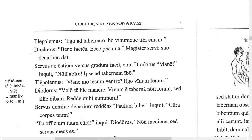Tlepolemus says, 'Ego a te ad tabernam ibo' — I will go to the shop — 'vinumque tibi emam' — and I will buy wine for you. Notice the future tenses here: 'ibo' uses the bo/be/boo future, and 'emam' from the third conjugation uses the a/e future. Diodorus says, 'Bene facies' — you will do well. The teacher gives a denarius, a silver coin, to his slave.